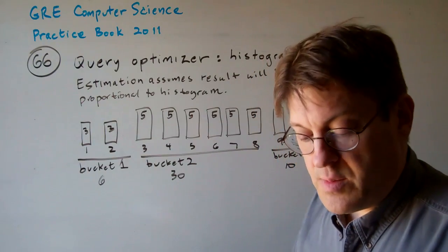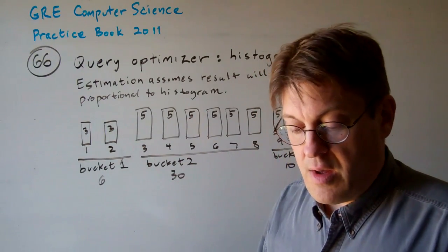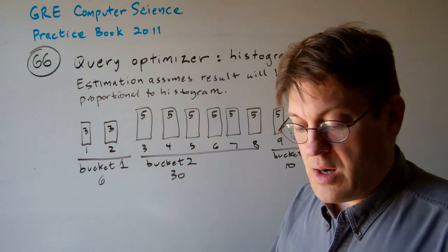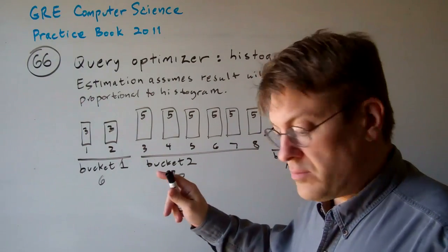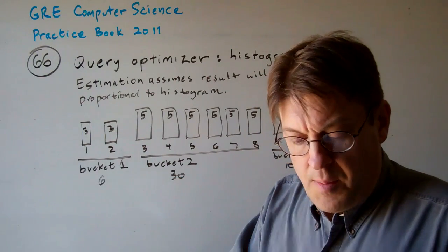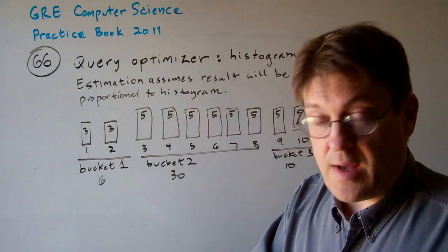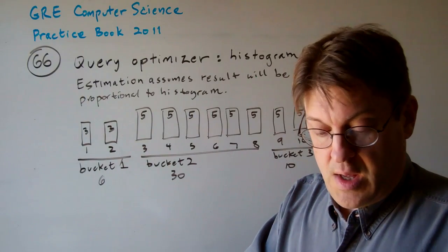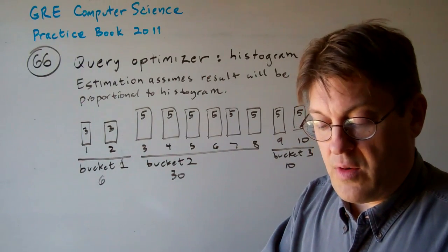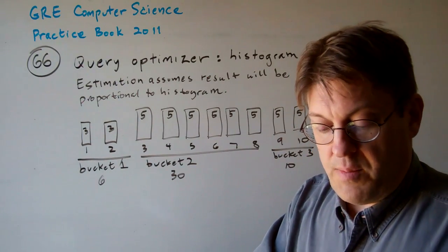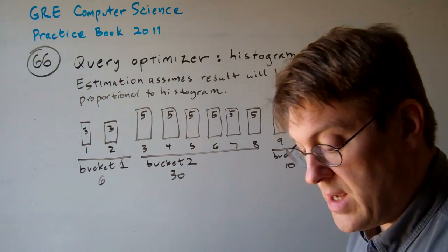Here's what we've got in this problem. The following shows one such histogram for relation r on a discrete attribute with domain 1 through 10. Bucket 1 has range 1 to 2 with a cumulative tuple count of 6. Bucket 2 has range 3 to 8 with a cumulative tuple count of 30. Bucket 3 has range 9 to 10 with a cumulative tuple count of 10.